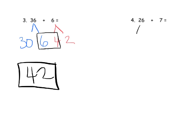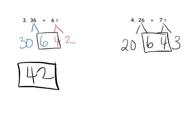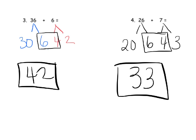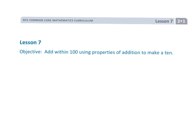Last problem: 26 can be decomposed to 20 and 6. Then 7 is decomposed to 4 and 3, and there's our 10. We have 33 as our answer. That's adding within a hundred using properties of addition to make a 10.